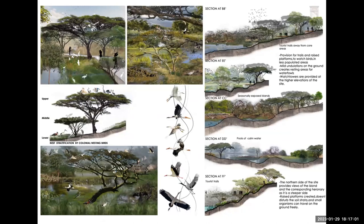For humans, trails and race platforms are provided towards bird areas in less populated zones. Watchtowers are provided at higher elevations. For birds, seasonally exposed islands, pools of calm water, co-habited areas, and heronaries are designed. Mild undulations on the ground create resting areas for waterfowl. The conclusion is that there is a clear split between those who consider ecological importance of wetlands and those who value water resources only as instruments of economic growth. In the process of over-utilization of all water resources, ecological damage is inevitable — this approach has created qualitative and quantitative degradation of all wetlands in the state. Thank you.